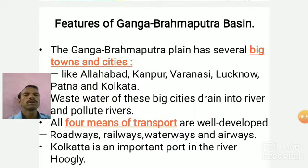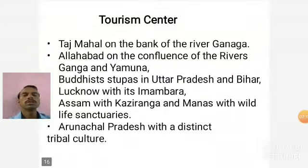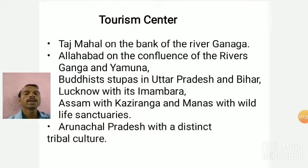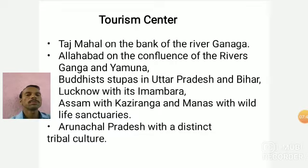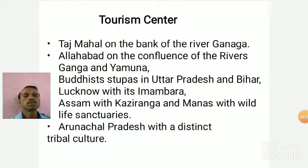On the bank of the Hooghly River, Kolkata is an important port. Now, Tourism Centers — the Taj Mahal on the bank of the river Yamuna, like Allahabad at the confluence — confluence is where two rivers come together — the confluence of the Ganga and Yamuna rivers. Buddhist stupas in Uttar Pradesh and Bihar, Lucknow with its Imambara, and Assam with Kaziranga and Manas wildlife sanctuaries — these are famous and well-known in the world. People from every corner of the world visit this area, making it one of the most beautiful and popular tourist regions. Hence, this is a major Tourism Center.